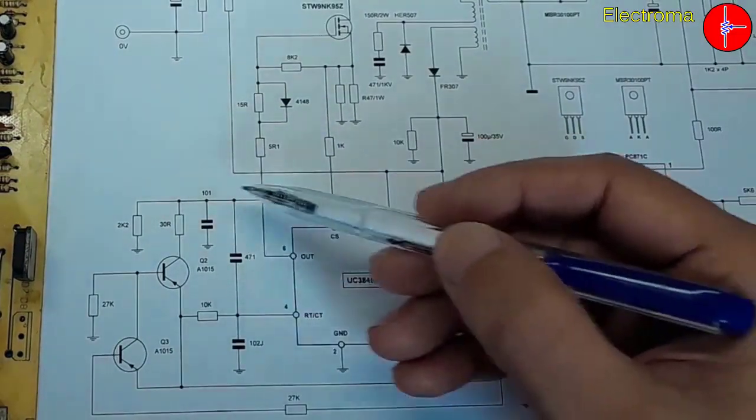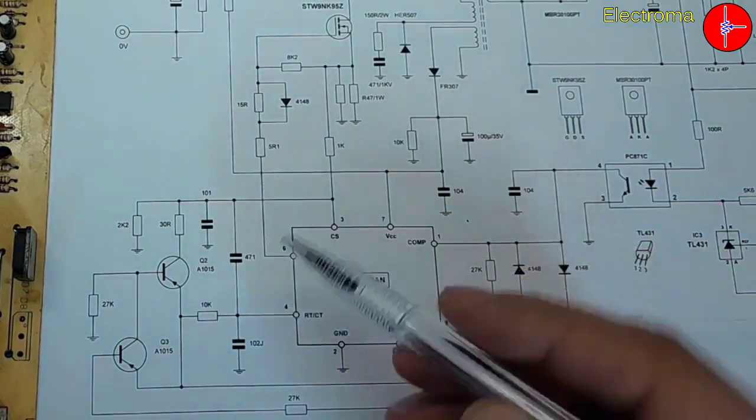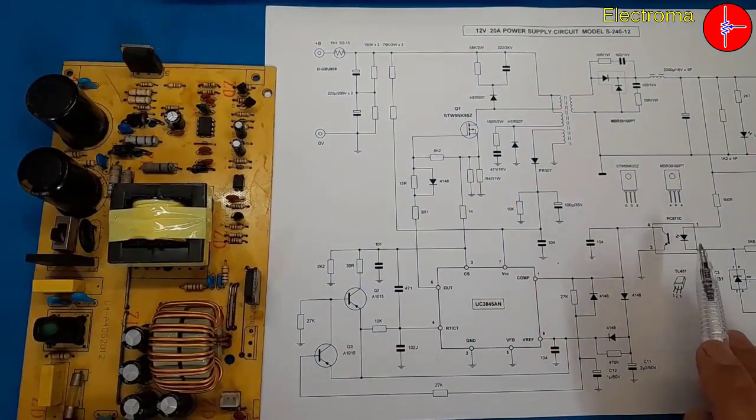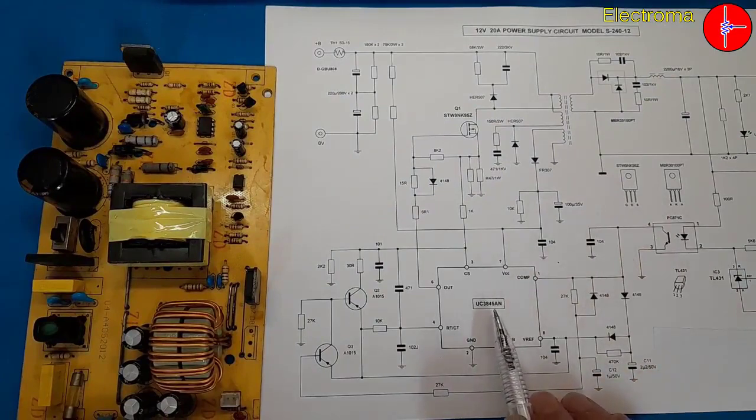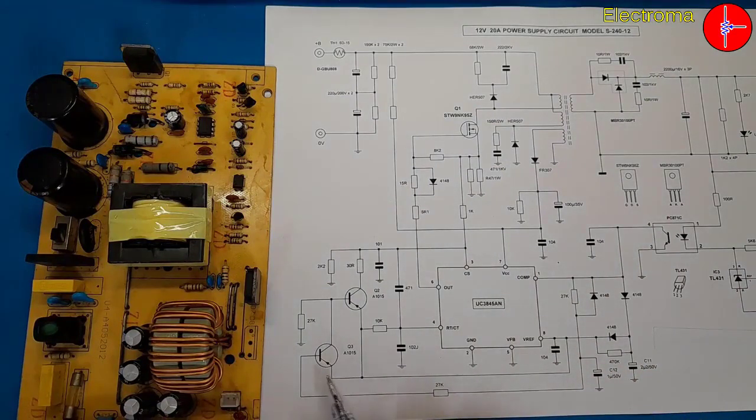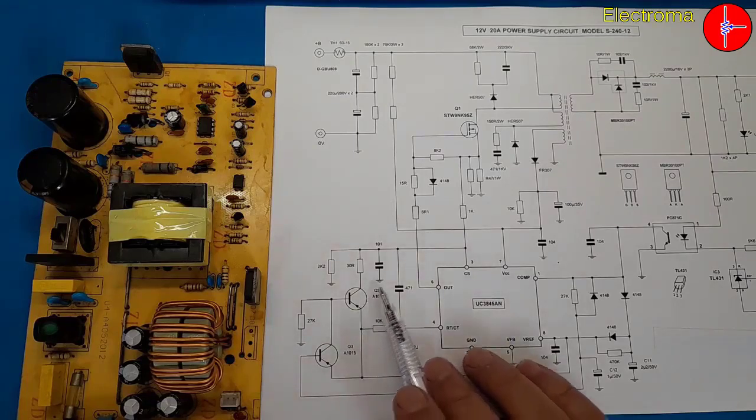If for any reason enough information does not reach the IC, the IC throws the optocoupler. The transistor numbered Q3 turns off and the transistor numbered Q2 is turned on.